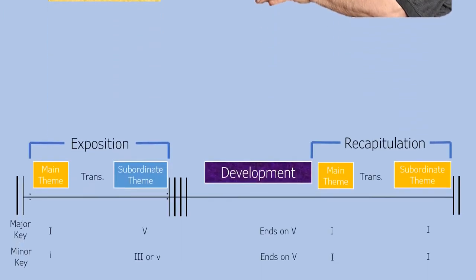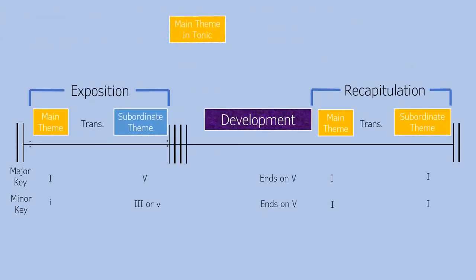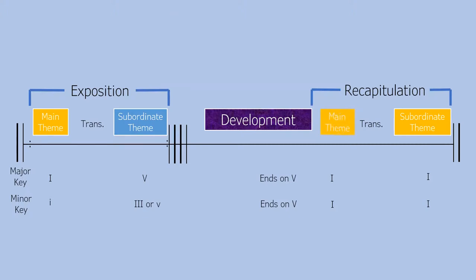For example, some sonatas in the classical period bring back the main theme in the tonic key right at the beginning of the development section. Rosen believes that this practice of writing in a premature reprise responded to the 18th century penchant for symmetrical forms, but it completely undercuts the drama and tension we've come to expect of a development section. On the other hand, some sonatas leave out the first phrase of the main theme when it's recapitulated, meaning that the memorable beginning of the melody, which so often helps us gather our bearings at the beginning of a recapitulation, is no longer there to aid our orientation in the form.